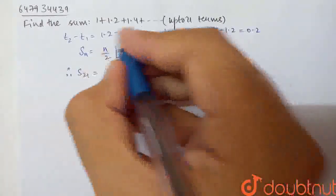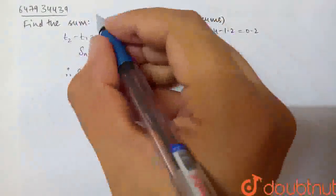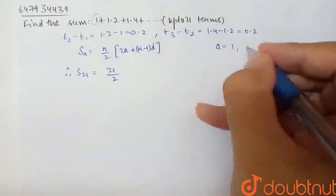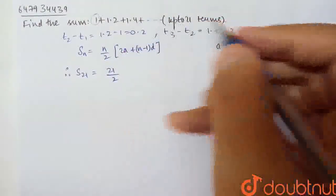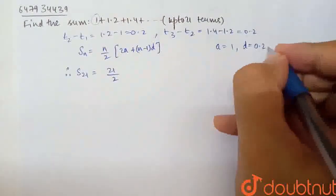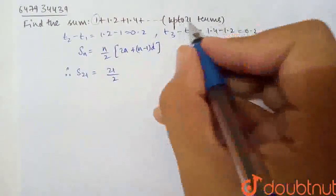a is the first term, which is 1. d is the common difference, which is the difference between two terms, which is 0.2. And n is the number of terms, that is 21.